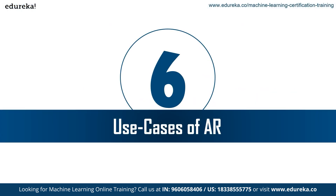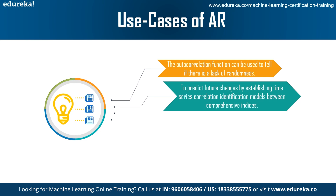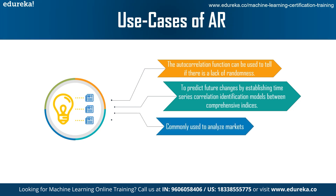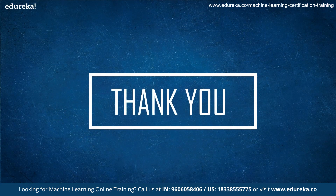Finally, let's look at some use cases of auto regression. Auto regression can help us find if there is a lack of randomness in the data. The primary use case is to predict future changes using time series indexing. Auto regression is also commonly used to analyze markets such as the stock market, and it can forecast recurring or seasonal patterns in data. I hope you enjoyed the session — if you have any doubts, please leave a message in the comment section. Happy learning!